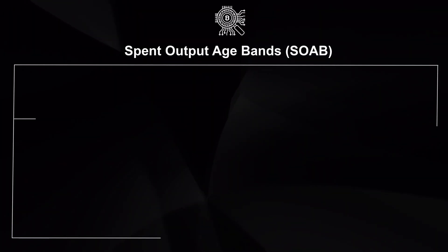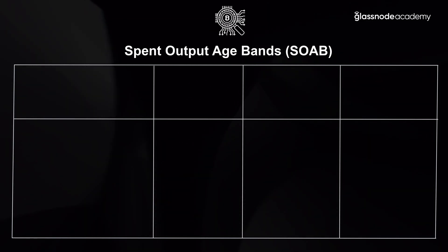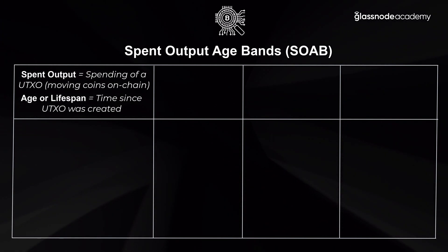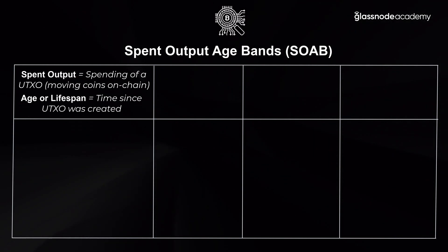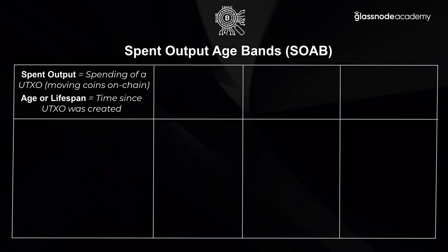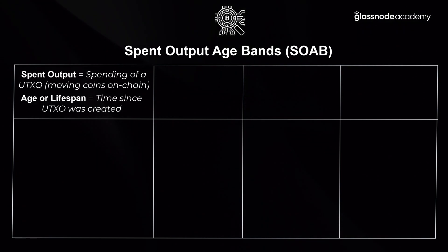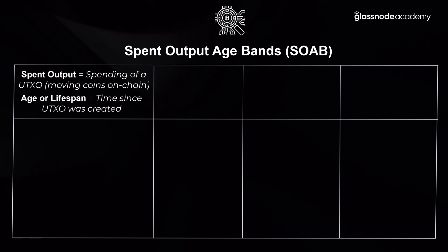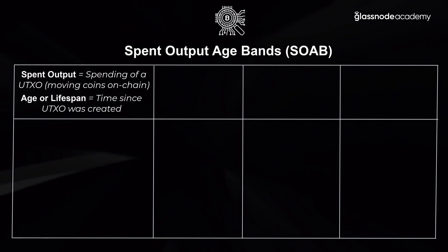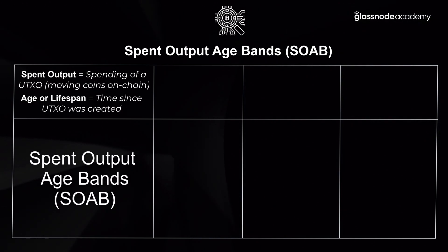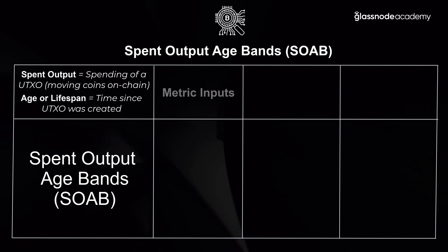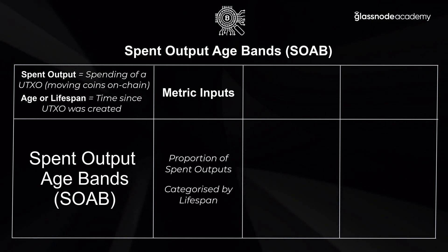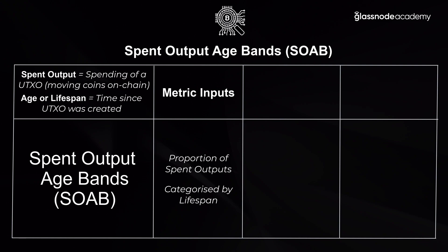To get started, let's define a couple of terms. The first is the spent output. Bitcoin is a UTXO-based chain, standing for unspent transaction output. Whenever a coin is moved on chain, it creates an unspent transaction output, or UTXO, which holds some volume of BTC. From the time a UTXO is created until it's spent, it accumulates lifespan — what we classify as age. So when looking at spent output age bands, we're looking at the overall proportion of different spent UTXOs and the age each one had accumulated.